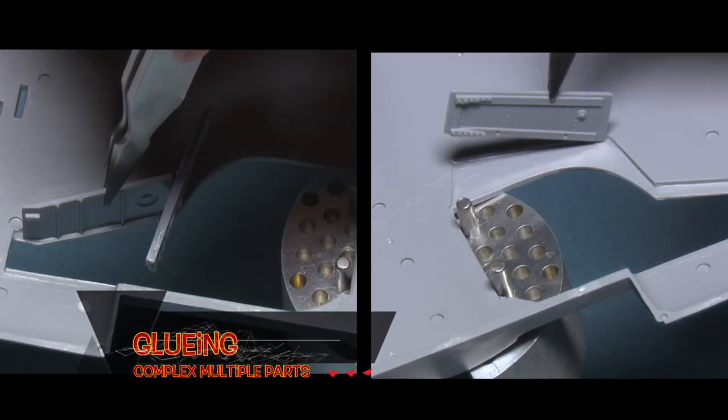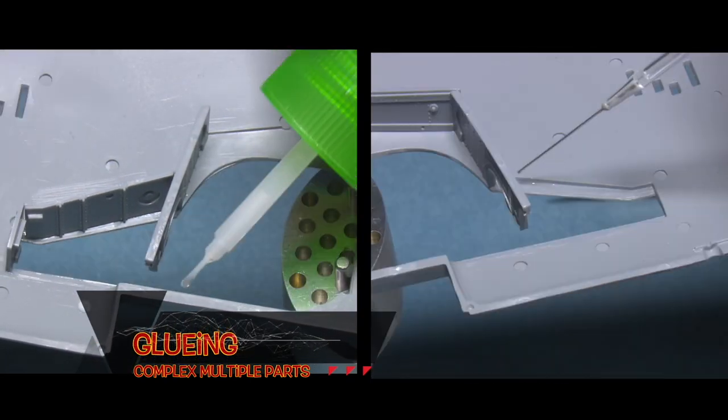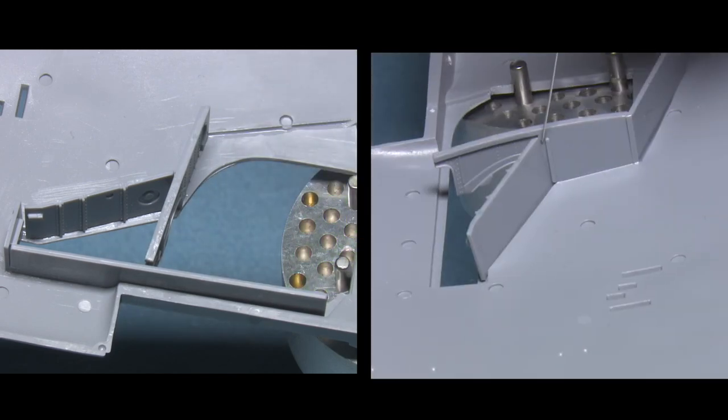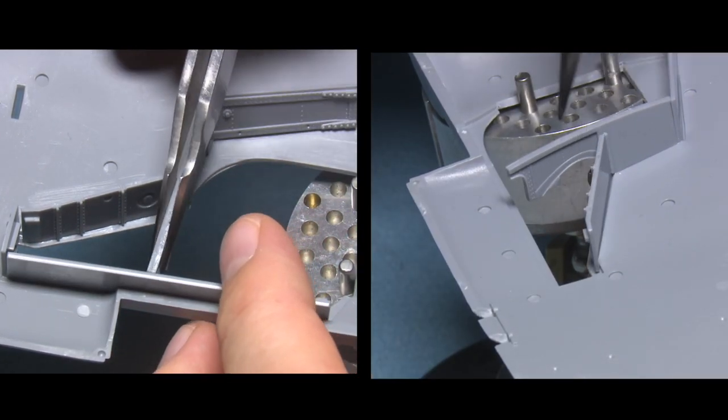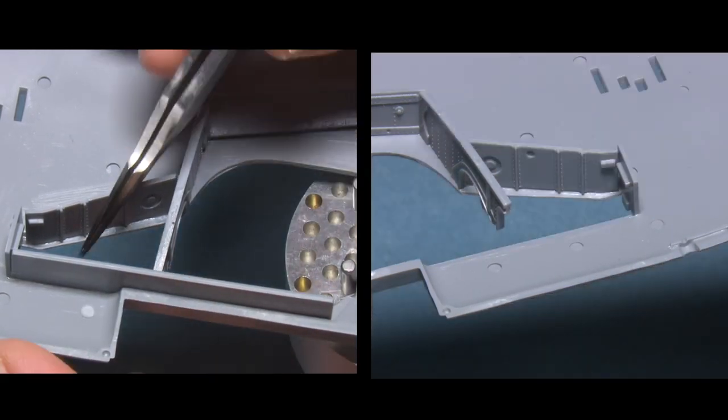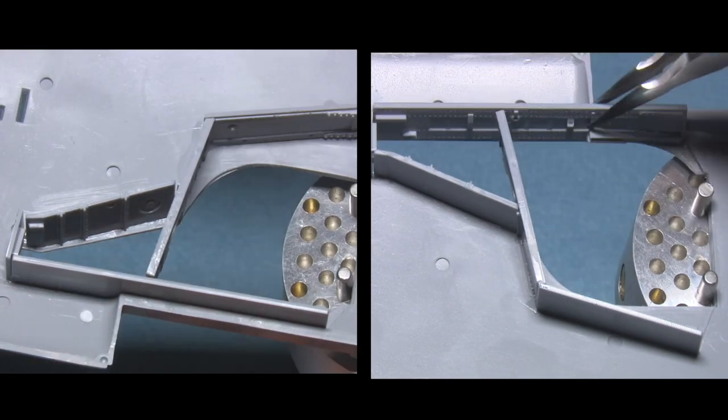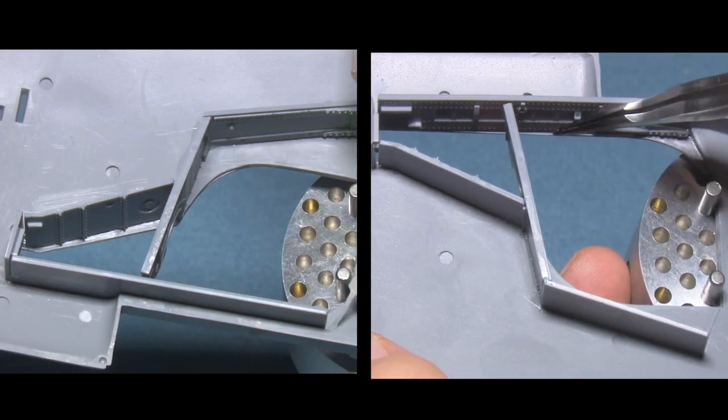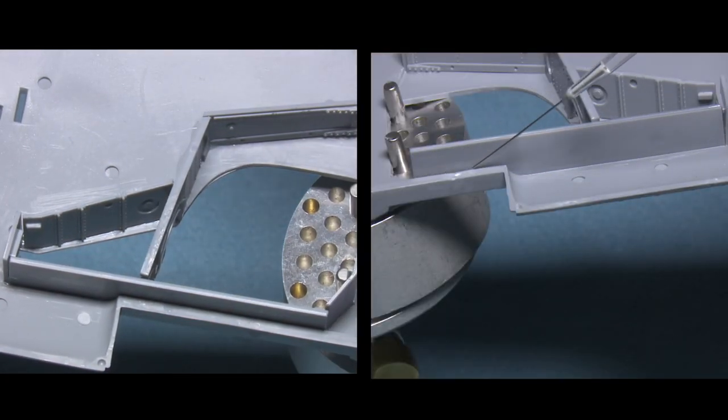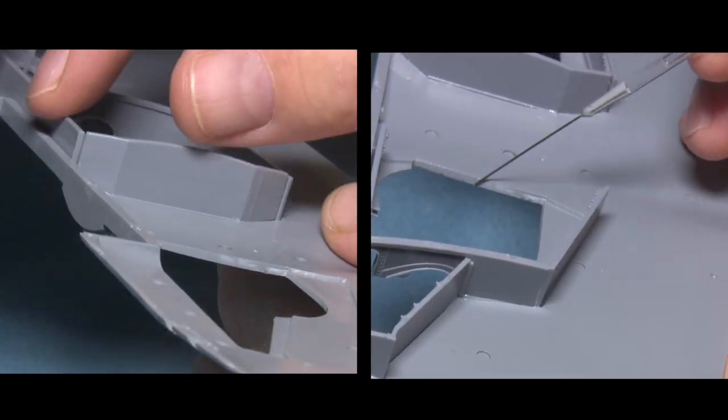When gluing complex multiple parts that require mutual support in order for them to remain in place where they're supposed to go, it is important that you glue all of these pieces at the same time. If you were to glue one piece and let it set, it may not be in the correct place, and sometimes a little bit of jiggling is required to make sure that they fit properly. So again, assemble the whole component as one, and then let it set.